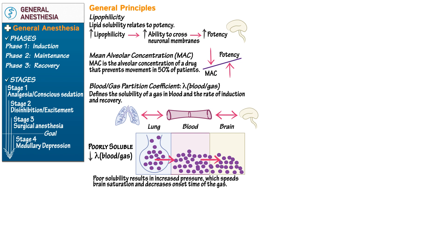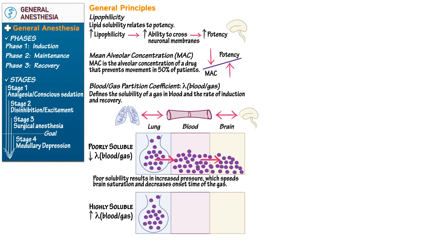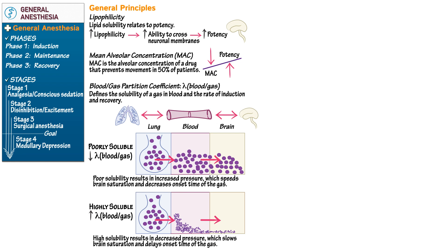Poor solubility results in increased pressure, which speeds brain saturation and decreases the onset time of the gas. Conversely, with a highly soluble drug and a high blood-gas partition coefficient, the drug passes into the alveoli and dissolves into the blood. Its high solubility means it takes longer for partial pressure to build, moving the drug into the brain more slowly — high solubility results in decreased pressure, slowing brain saturation and delaying onset.